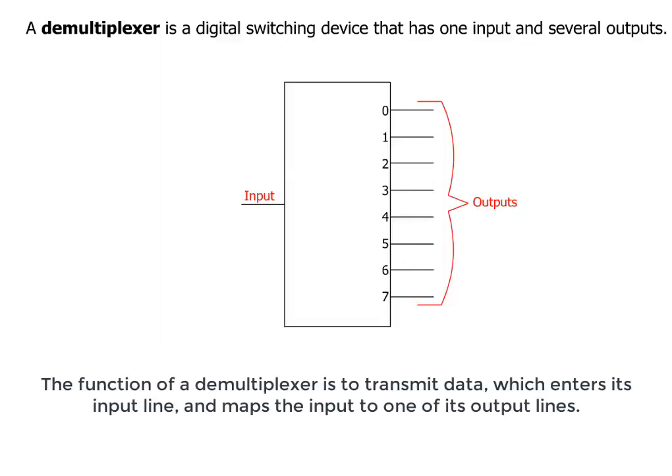A demultiplexer is a digital switching device that has one input and several outputs. The function of a demultiplexer is to transmit data, which enters its input line and maps the input to one of its output lines.